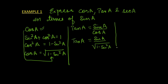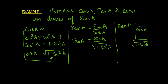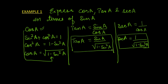And secant A is the reciprocal of cosine A. So we can write sec A as 1 over cosine A. Since cosine A equals the square root of 1 − sin²A, we get sec A = 1 over the square root of 1 − sin²A. Using the identity sin²A + cos²A = 1, we have expressed cos A, tan A, and sec A in terms of sin A.